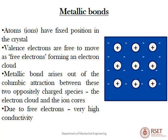The metallic bond is experienced mainly in metals. Atoms have fixed positions in the crystal, and valence electrons are free to move as free electrons, forming an electron cloud. Positive ion cores are also present. The metallic bond arises from Coulombic attraction between the electron cloud and the positive ion cores. Due to these free electrons, metals have very high electrical conductivity.